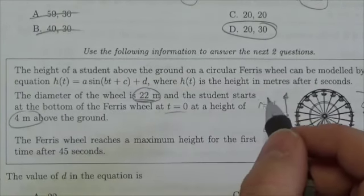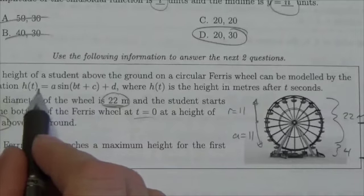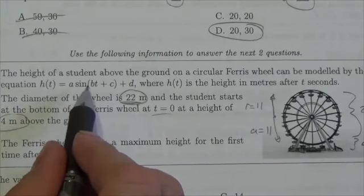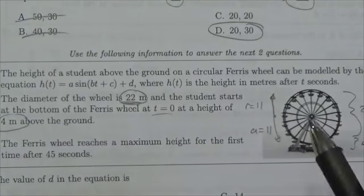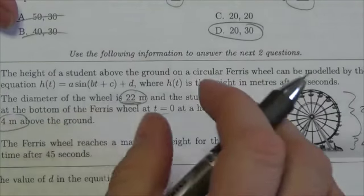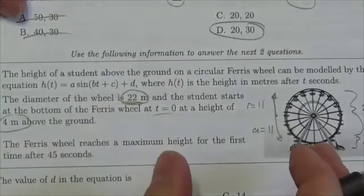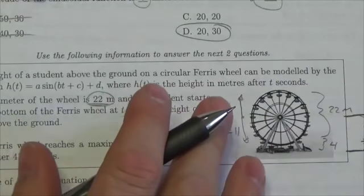The height of a student above ground on a circular Ferris wheel can be modeled by the equation h(t) equals a sine of bt plus c plus d, where h(t) is the height in meters after t seconds. Now, the diameter of the wheel is 22, and we've already established that that tells us that the amplitude is 11.